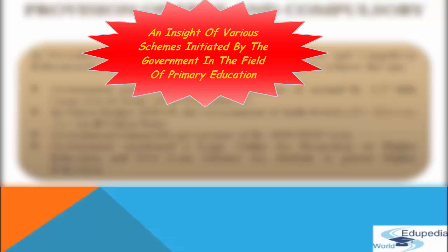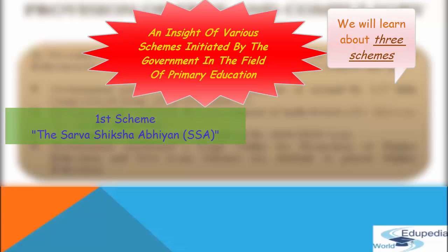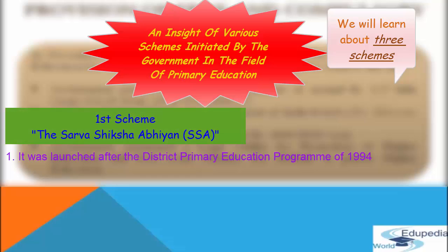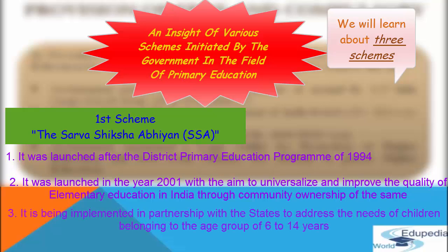The government has initiated a number of schemes for primary education. The first is Sarva Shiksha Abhiyan (SSA). After the District Primary Education Programme of 1994, the government launched SSA in 2001 to universalize and improve the quality of elementary education in India through community ownership. The SSA is implemented in partnership with states to address the needs of children in the age group of 6 to 14 years.